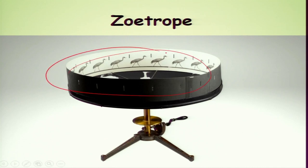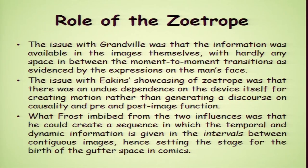What Frost imbibed from both Grandville and Muybridge was that he could create a sequence in which temporal and dynamic information is given in the intervals between contiguous images — hence setting the stage for the birth of the gutter space in comics, which is the gap between two panels of a strip where time, space, and action contract and expand with the observation and imagination of the reader.